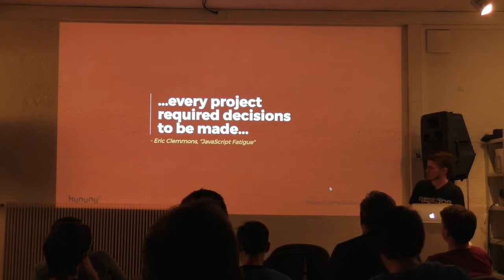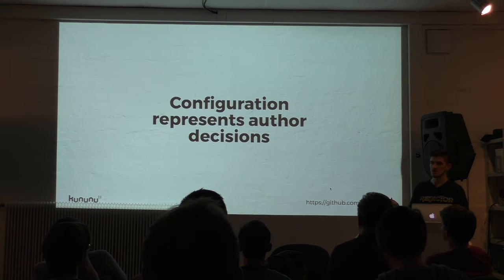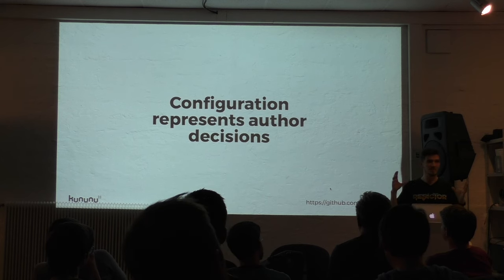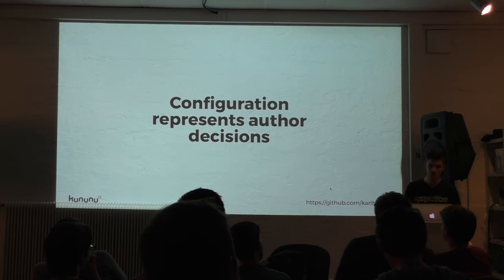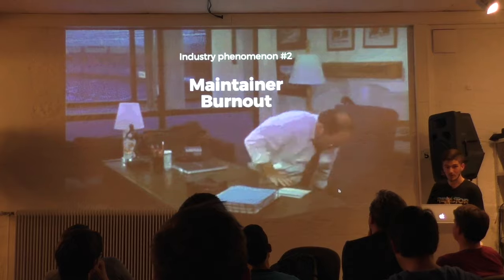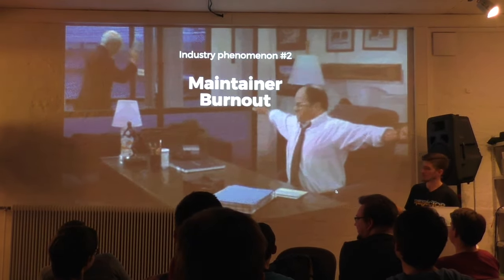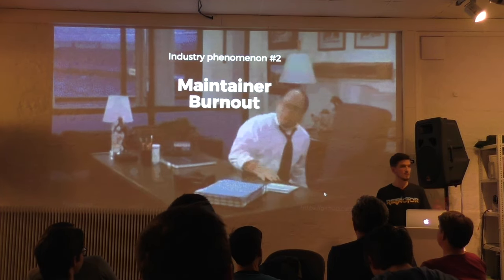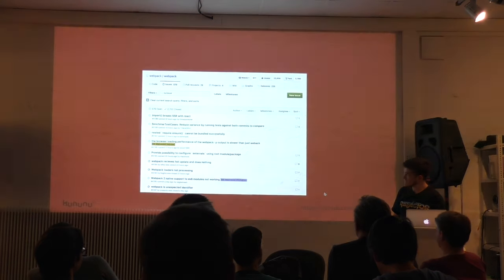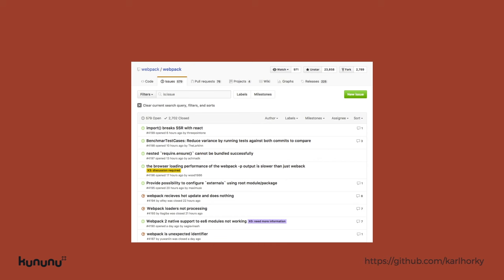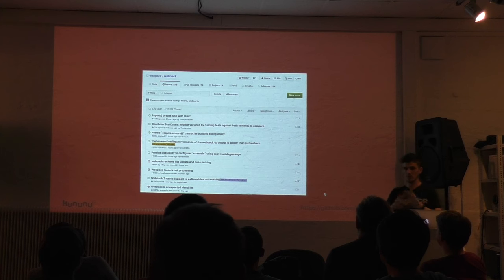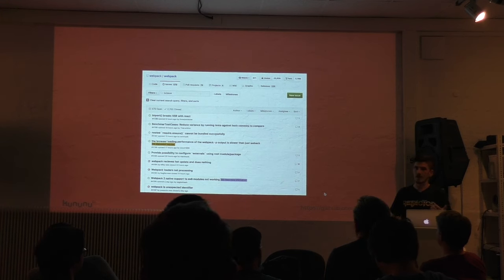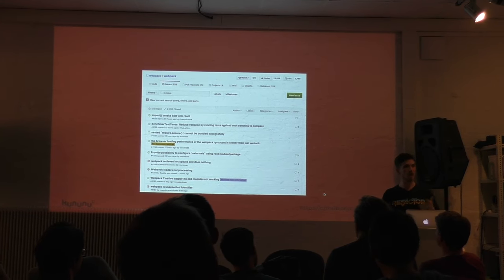Configuration represents author decisions — decisions that people who write this web stuff have to make with every new project. Industry phenomenon number two: maintainer burnout. There have been prominent examples in the community of people saying they're off Twitter, off GitHub, they're done. They come in the morning and see ten different issues about specific configuration requirements — someone who wrote five words like 'this doesn't work' — and they have to debug everything, multiplied by the number of options a tool has. Webpack is a particularly complex example.